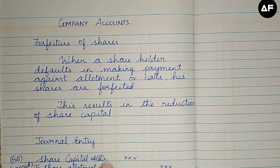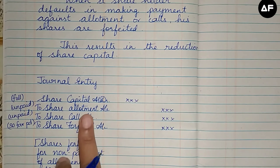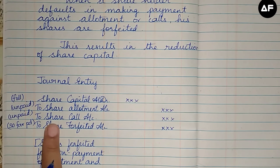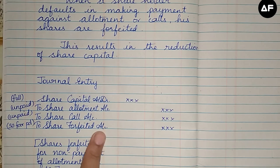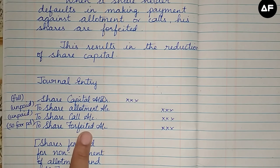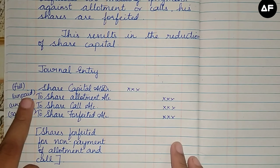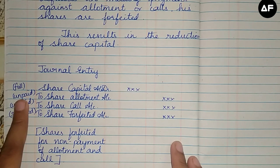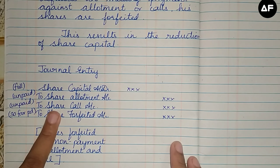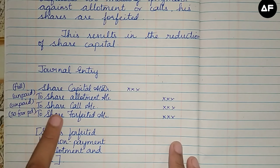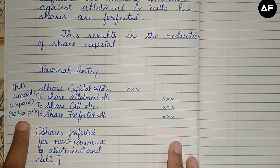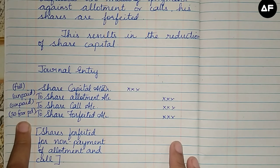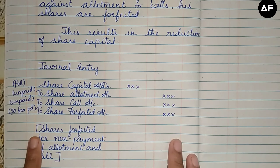To reflect the cancellation of shares into journal entries, the entry is: Share Capital Account debit, to Share Allotment, to Share Call Account, to Shares Forfeited Account. You can write it as 'Forfeited Shares Account' or 'Shares Forfeited Account' — both are correct. The narration is: shares forfeited for non-payment of allotment and call money.